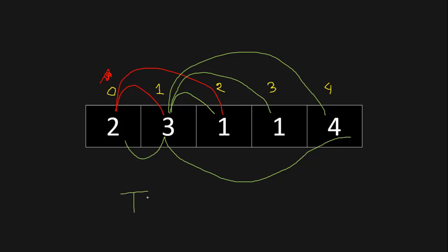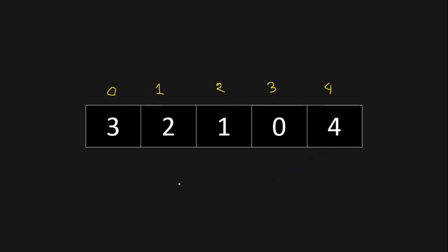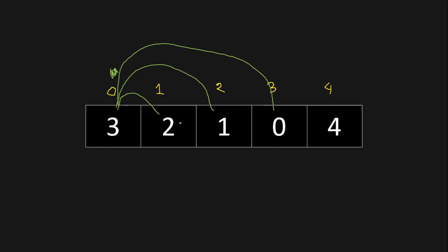So in this case we have to return true. Now, given this particular second array as input, let's see if we can reach the last index. Initially we're positioned at index 0, where we have a maximum jump length of 3. So we can jump to index 1, index 2, or index 3. If we jump to index 1, from there we can make 2 jumps — we can go to index 2 or index 3.